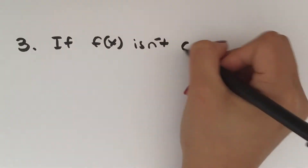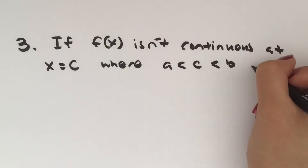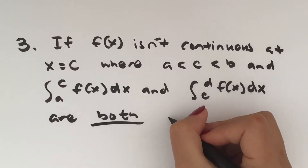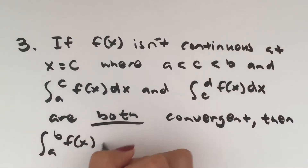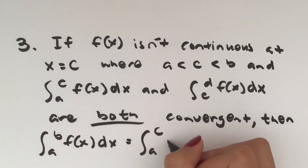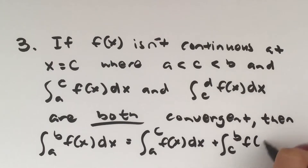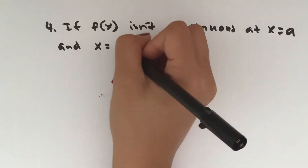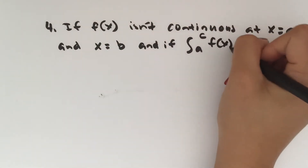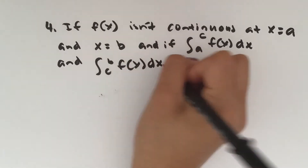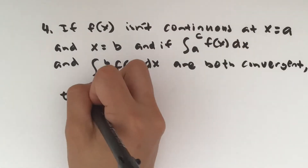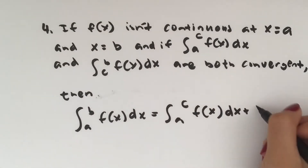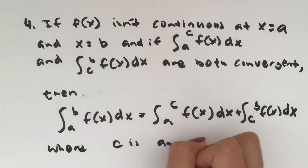In the third case, if f(x) is not continuous at x = c where a < c < b, and the integral from a to c and the integral from c to b are both convergent, then the integral from a to b equals the integral from a to c plus the integral from c to b of f(x) dx. The fourth case is that if f(x) is not continuous at both x = a and x = b, and the integrals from a to c and from c to b are both convergent, then the integral from a to b equals the integral from a to c plus the integral from c to b of f dx, where c is any number.